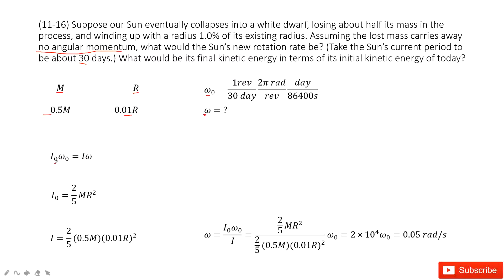Initially we have I₀ω₀. The Sun's moment of inertia is 2/5 MR². And ω₀ is given.